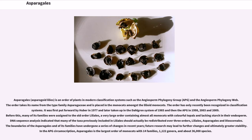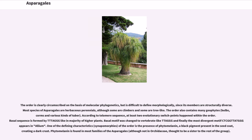In the APG circumscription, Asparagales is the largest order of monocots with 14 families, 1,122 genera, and about 36,000 species. The order is clearly circumscribed on the basis of molecular phylogenetics, but is difficult to define morphologically.